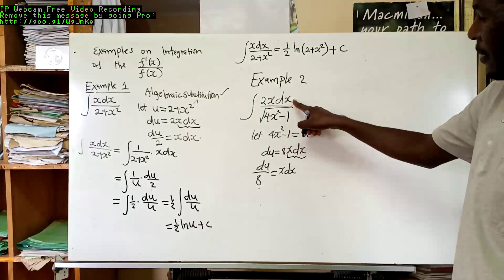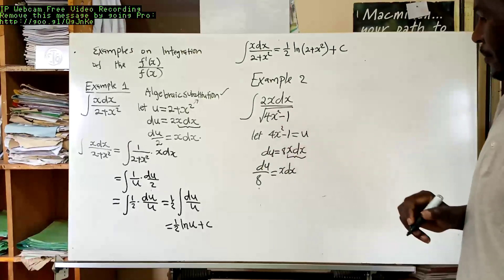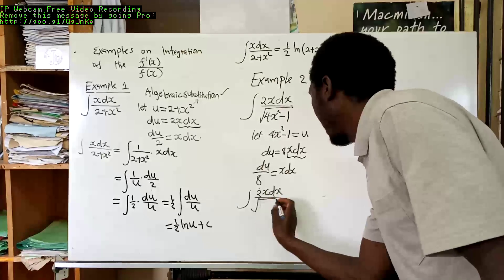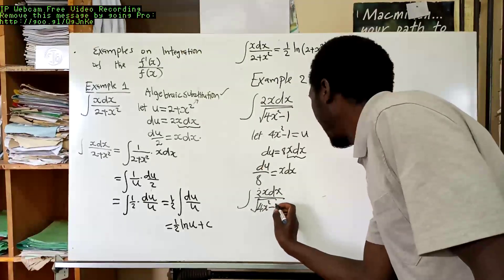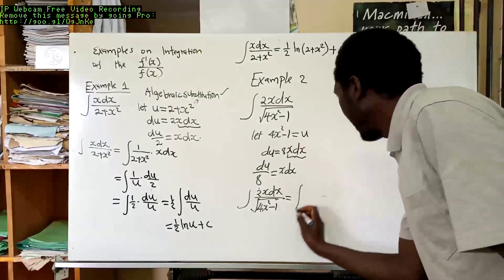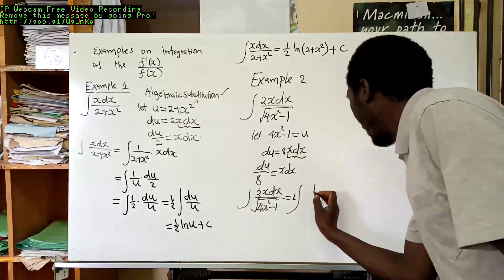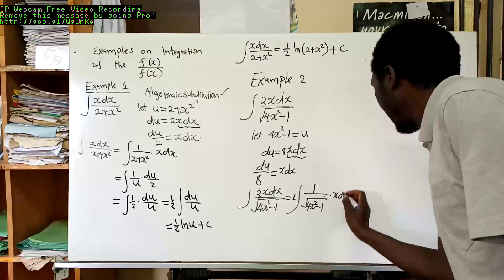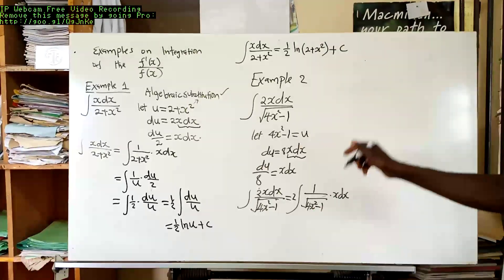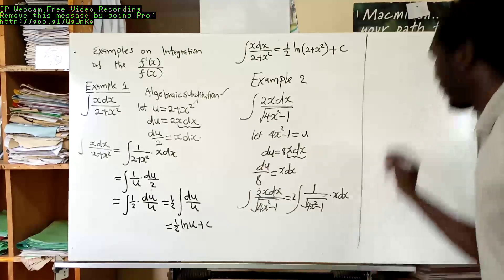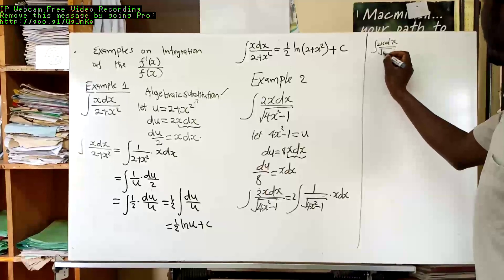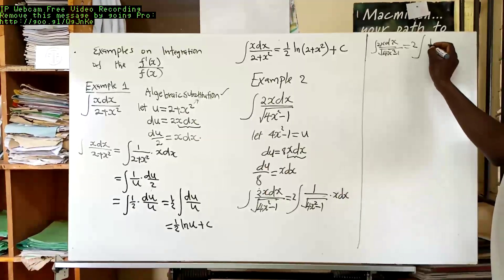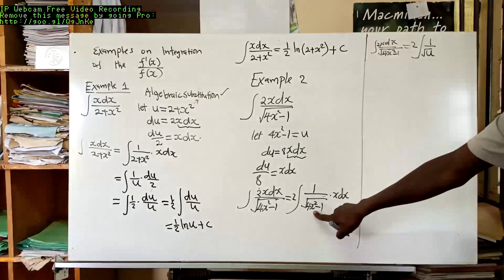We substitute x dx and 4x squared minus 1 into the integral. The integral of 2x dx divided by the square root of 4x squared minus 1 can be rewritten by taking 2 outside as a constant, giving 2 times the integral of 1 over the square root of u. After substituting x dx with du over 8 and factoring, we get 2 divided by 8, which is one-quarter, times the integral of du over the square root of u.